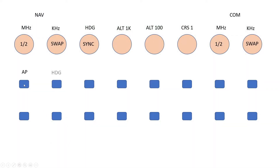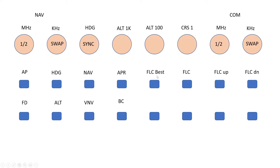So we allocate these across here: autopilot, toggle heading, nav approach mode, toggle the flight director, altitude hold, vertical nav — which doesn't actually feature yet in the G1000 simulator, but I'll put it here in case it does get developed — and the back course. Over here is the flight level change: increase and decrease the target airspeed. I'll also introduce this extra button to immediately take it to the best rate of climb speed. And down here, the vertical speed mode to increase and decrease the descent or ascent rate.